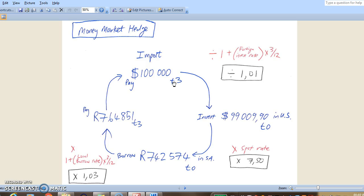So how much do we need to invest now that will grow at 4% interest rate to $100,000 in 3 months time? How do we calculate that?